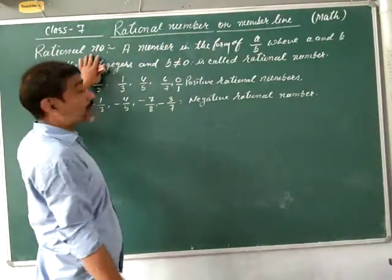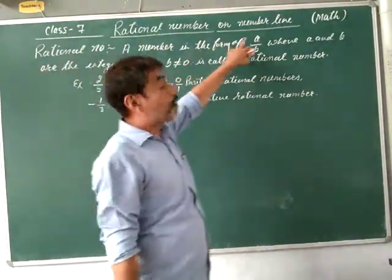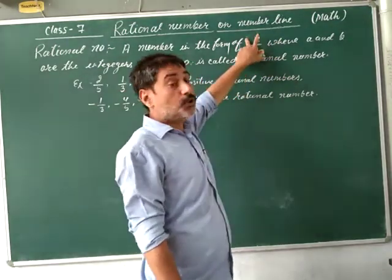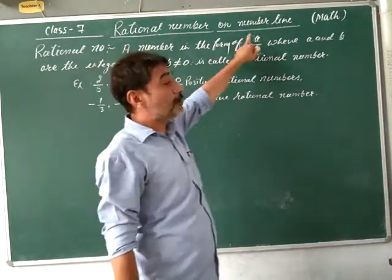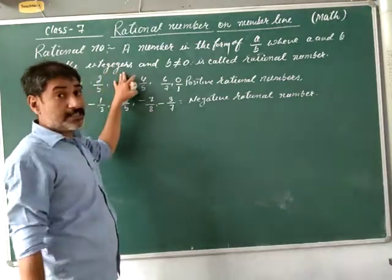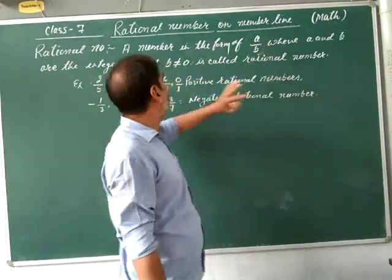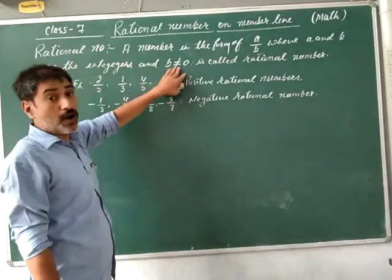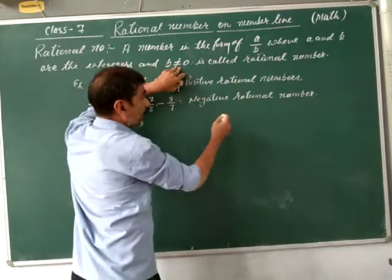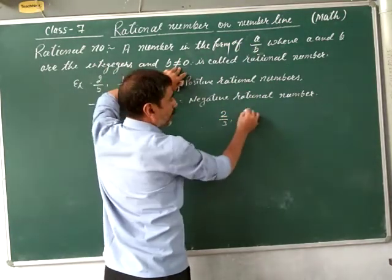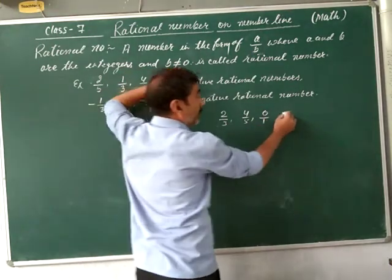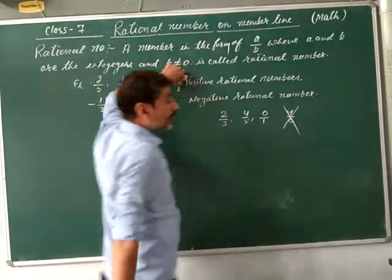First, a rational number is a number in the form of A by B, where A and B are integers and B is not equal to 0. For example, 2 by 3, 4 by 5, and 0 by 1 are rational numbers, but 4 by 0 is not a rational number.